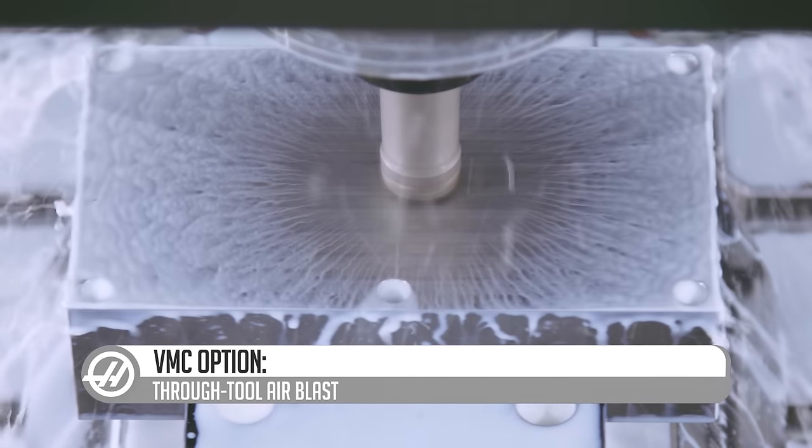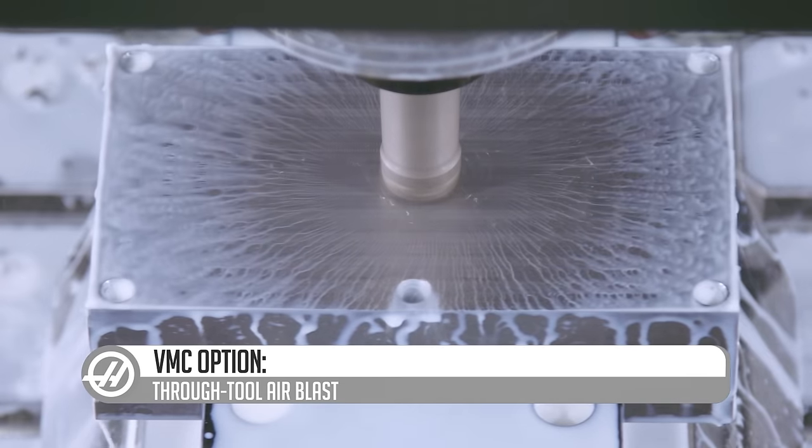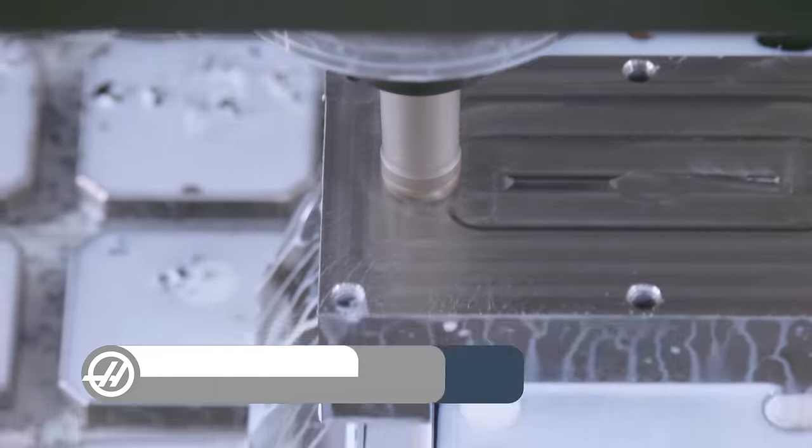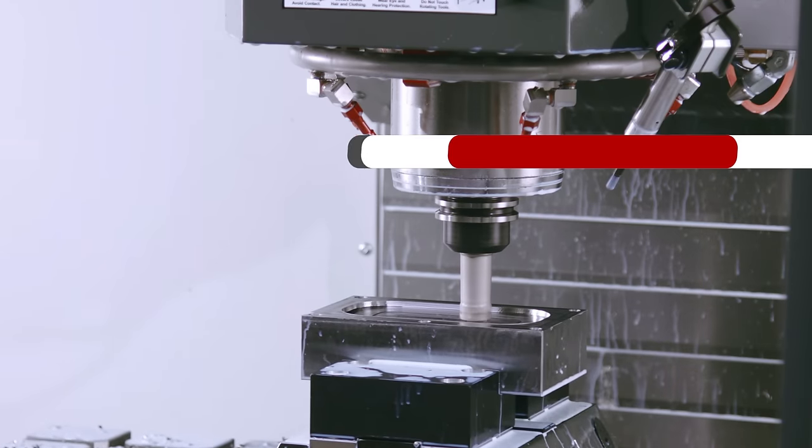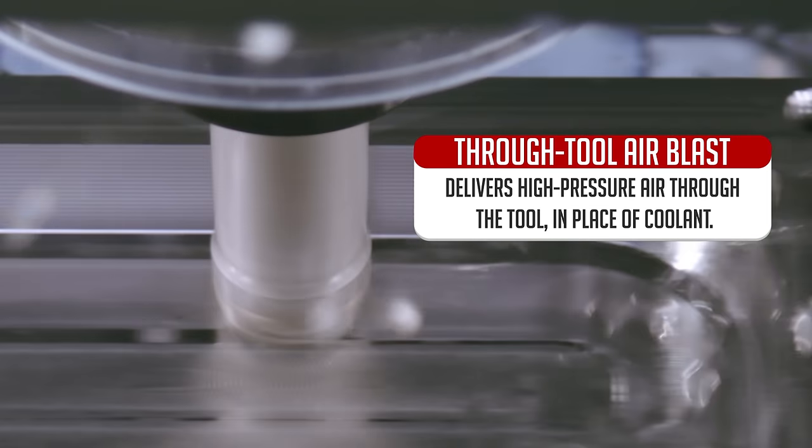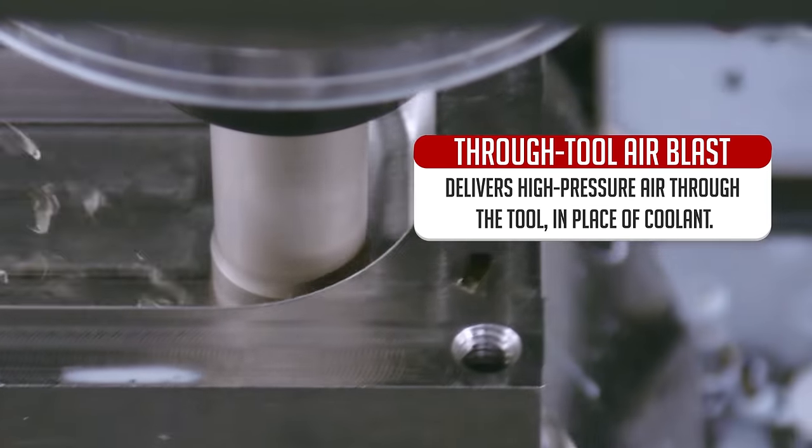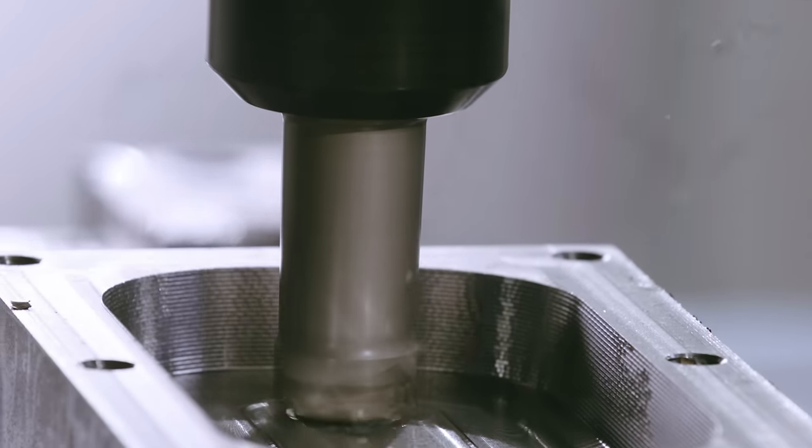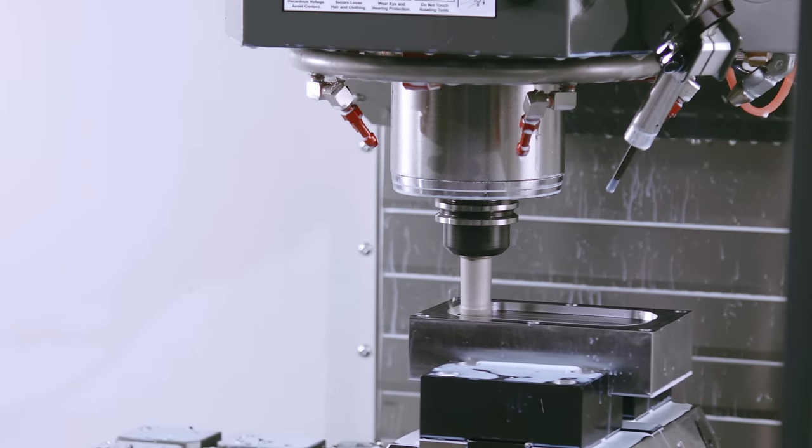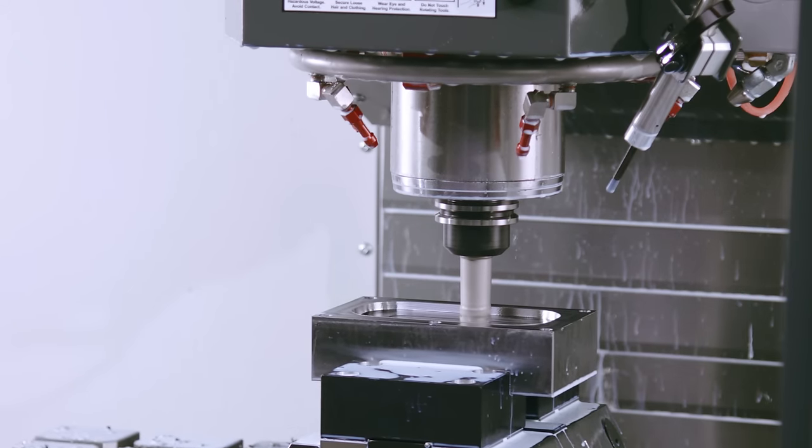That's where Thru Tool Air Blast comes in. Available as an add-on option to the TSC system, Thru Tool Air Blast delivers high-pressure air through the tool in place of coolant, blasting chips away from the cutting zone before they can be cut a second time. This is particularly useful for deep cavity machining, keeping pockets like the one we're doing here chip-free.